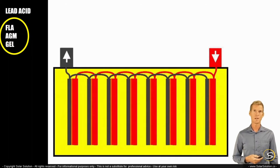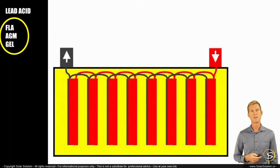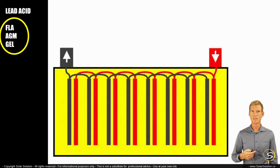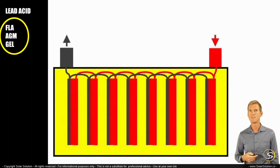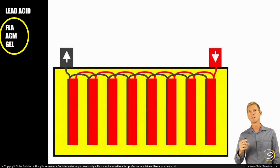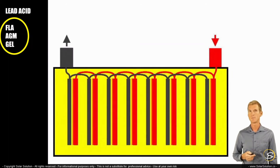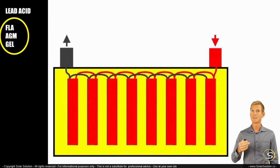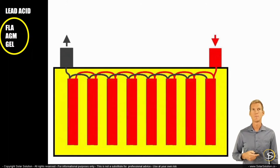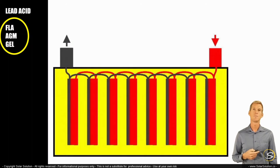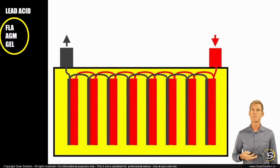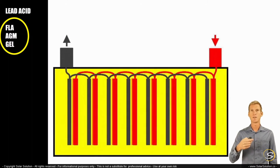AGM — absorbed glass mat — batteries are also lead-based batteries. With AGM batteries, the electrolyte is absorbed in a glass mat, giving them a couple of advantages: they are lower maintenance, and you can typically place them in different orientations without the electrolyte spilling out, because it is held in place in the glass mat. There are also gel batteries, which again are lead-acid batteries, but whereby the electrolyte is held in place by a gel instead of being a liquid.